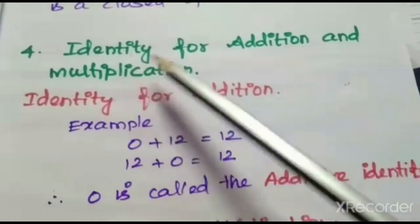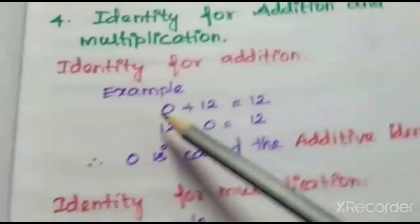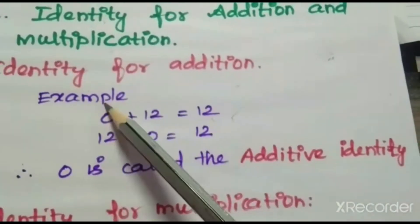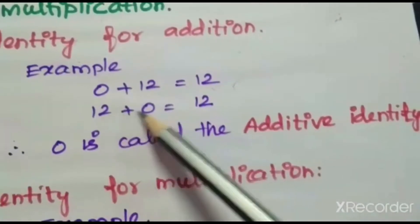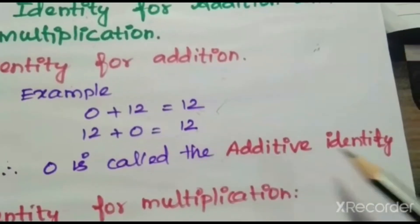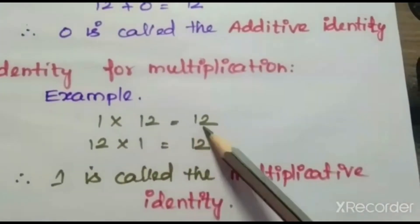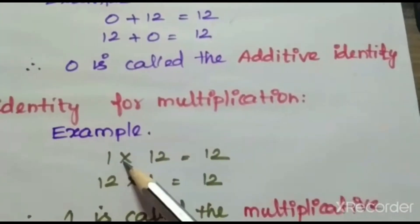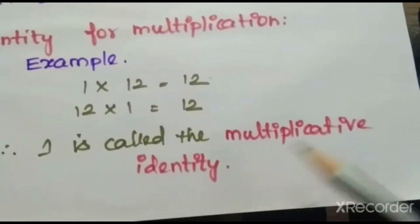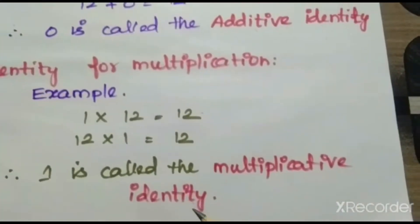Next, we are going to learn the identity for addition and multiplication. For identity of addition: when 0 is added to any number, we get the same number. For example, 0 plus 12 equals 12, and 12 plus 0 equals 12 — so 0 is called the additive identity. For identity of multiplication: when we multiply any number by 1 we get the same number. For example, 1 into 12 equals 12, and 12 into 1 equals 12 — so 1 is called the multiplicative identity.